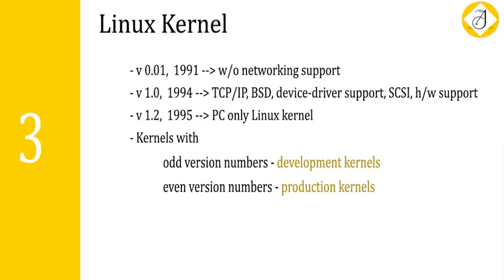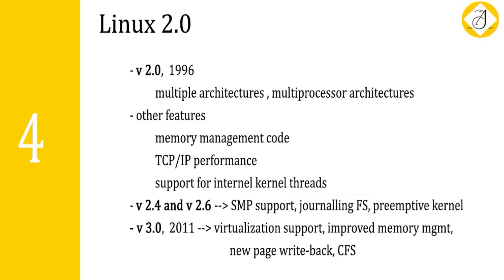Kernel versions are classified as odd version numbers and even version numbers; even version numbers are called production kernels. Linux 2.2 was released in the year 1996 with two major capabilities: support for multiple architectures and multiprocessor architecture. It also came with improved memory management code, improved TCP/IP performance, and support for internal kernel threads. Versions 2.4 and 2.6 support SMP, journaling file system, and a preemptive kernel.